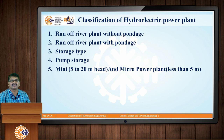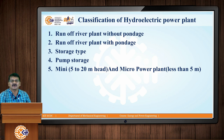The classification of hydroelectric power plants includes the run-of-river type without pondage, where the river is flowing but there is no pond — we can only generate power in the rainy season. The run-of-river plant with pondage has a pond beside the river, so we can store water in the rainy season and utilize it in summer when the river level is low.